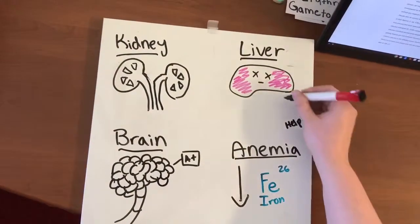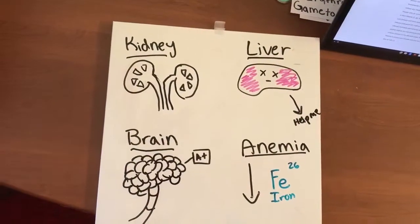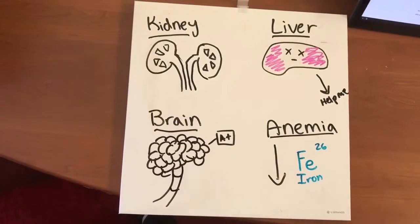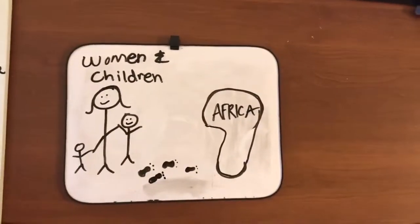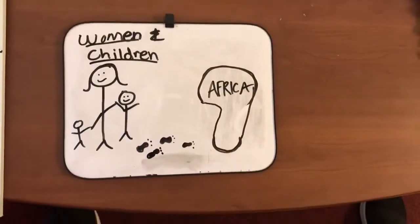If left untreated, malaria can lead to death or leave the infected individual permanently disabled. People with the highest risk of getting malaria are Sub-Saharan African travelers and women and children in infected areas.